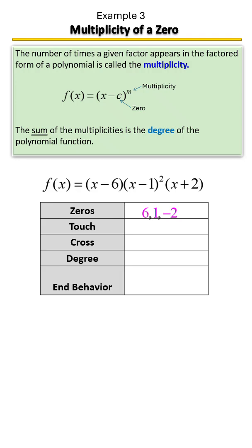Now if we were to graph this, where would it touch the x-axis? Touch it and then turn around. So that would be at the even degree multiplicities. We have one even multiplicity and that is at 1. So the other two zeros have a multiplicity of 1 which is an odd number, so it's going to cross at those two points.